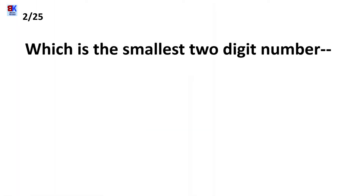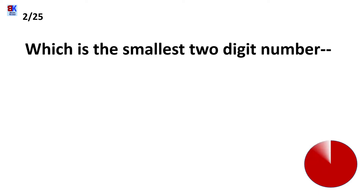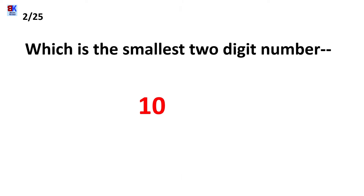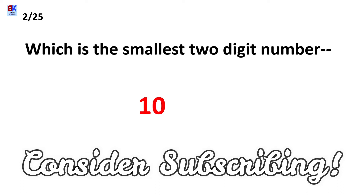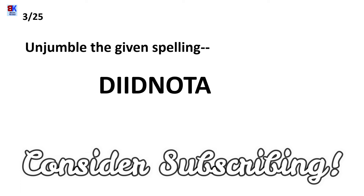The second question is: which is the smallest two-digit number? The answer is 10. The number before 10 is 9, which is the largest one-digit number, so the smallest two-digit number will be 10.